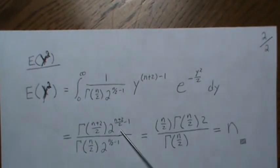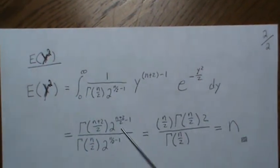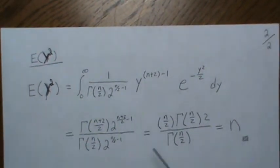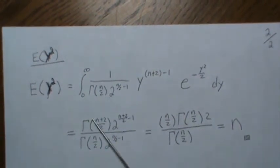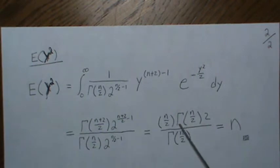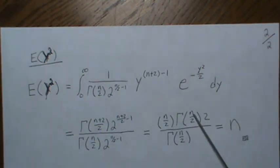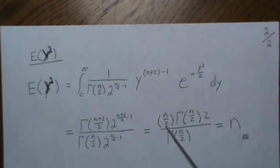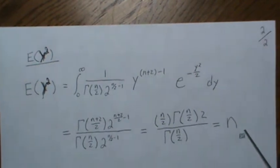Now these twos cancel down to just 2. Using the property of the gamma function, we can reduce that to n/2 times Γ(n/2). Then those cancel, and this 2 and that 2 cancel, leaving just n.